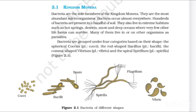2.1 Kingdom Monera — Bacteria. Bacteria are the sole members of Kingdom Monera. They are the most abundant microorganisms and occur almost everywhere. Hundreds of bacteria are present in a handful of soil. They also live in extreme habitats such as hot springs, deserts, snow and deep oceans where very few other life forms can survive. Many of them live in other organisms as parasites. Bacteria are grouped into four categories based on their shape: the spherical coccus, the rod-shaped bacillus, the comma-shaped vibrio and the spiral spirillum.